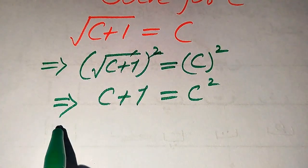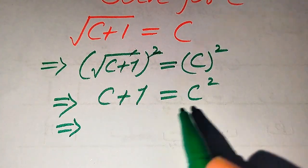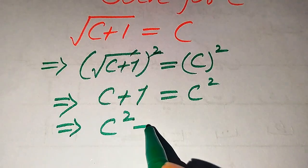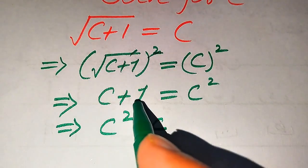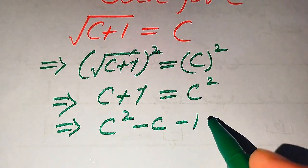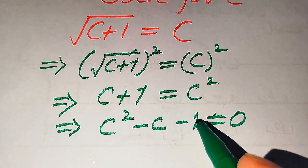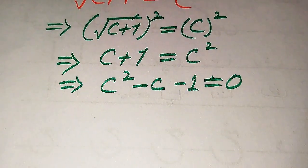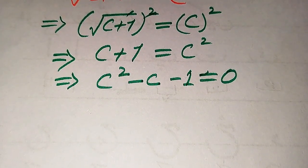In the next step we move the terms from the left hand side to the right hand side. It becomes c squared minus c minus 1 equals 0. This equation is now quadratic in the variable c.